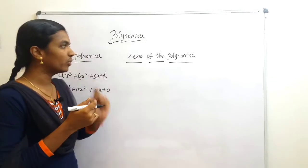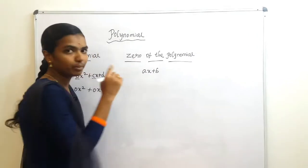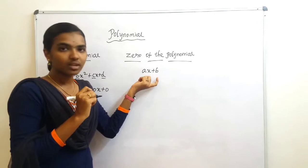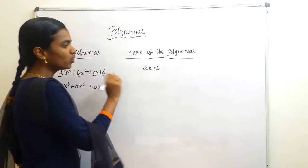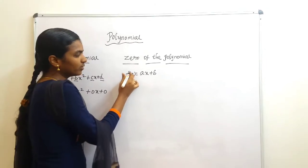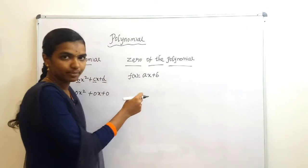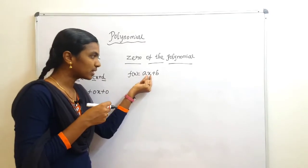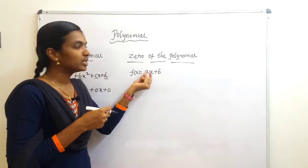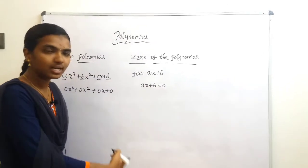Now coming to zero of the polynomial. I will explain using a general linear polynomial. A linear polynomial has the highest variable power equal to 1, so ax + b is a linear polynomial. We denote the polynomial with variable x as f(x). The zero of the polynomial is the value of x which, when substituted, makes the polynomial equal to zero.